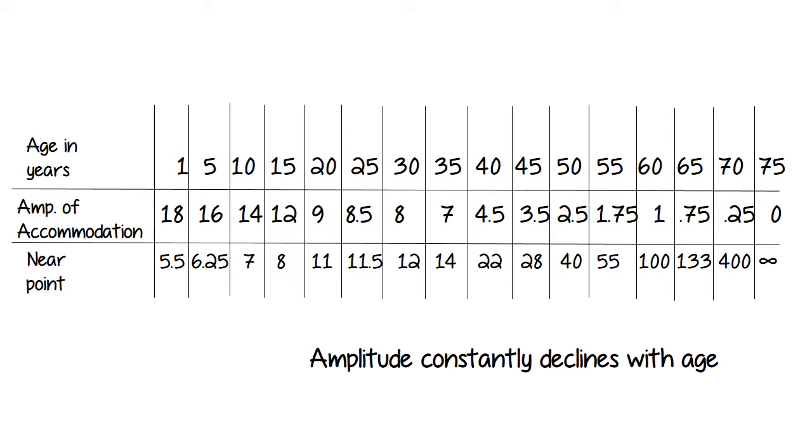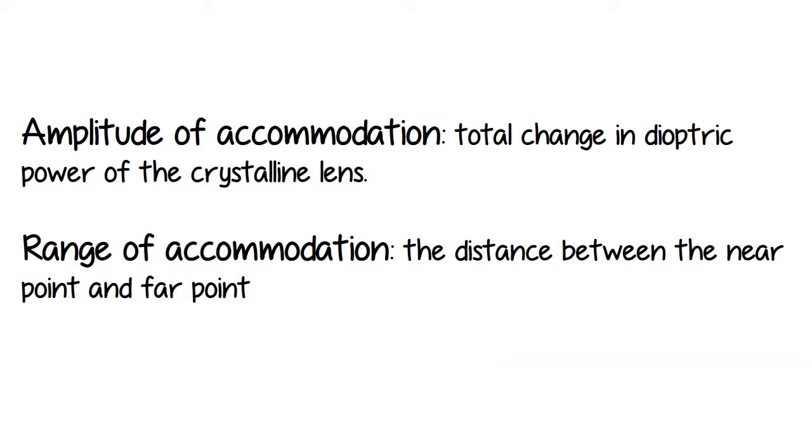This is one example of a chart that tells you at what age it's standard for a patient to need what strength of accommodation of bifocals or what have you. And like all charts or tables pertaining to human beings, it's just an approximation. One size does not really fit all. So it's just kind of something to go by, but you can't really follow it by rote. The amplitude of accommodation, you can see as the age increases, the amplitude of accommodation decreases, and the near point of course gets farther away. So the amplitude lowers, the near point raises, that's inverse proportion. So the amplitude of accommodation is the total change in dioptric power of the crystalline lens, and the range of accommodation is the distance between the near point and the far point.